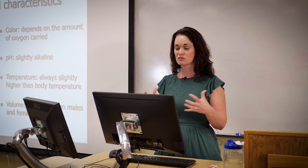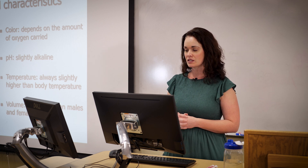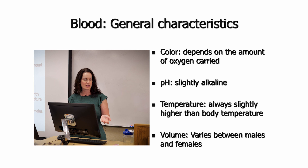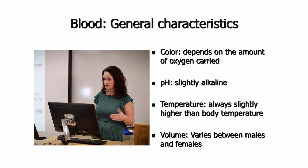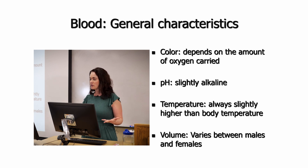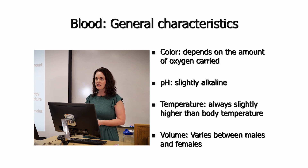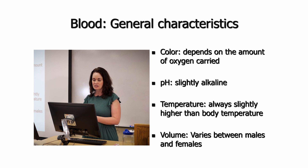Another important characteristic of blood is that it's slightly alkaline, with a pH of about 7.35 to 7.45, kept very tightly within that range. Its temperature is also slightly higher than body temperature — about two degrees higher — which allows blood to act as a heat sink. Blood volume in the body typically varies between about four to six liters, with males generally on the higher end and females on the lower end, based on body size.